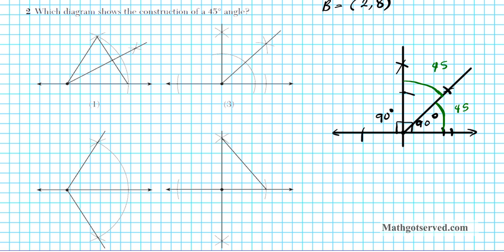Looking at the answer choices, we can clearly see our answer is option 3. In option 3, you start with a straight line, bisect it to get two 90-degree angles, and then bisect one of those 90-degree angles to get two congruent angles measuring 45 degrees each. So the answer is option number 3.